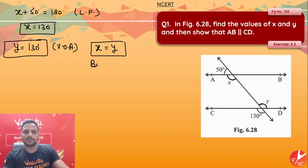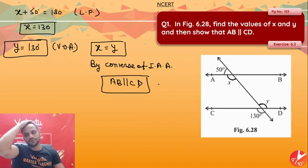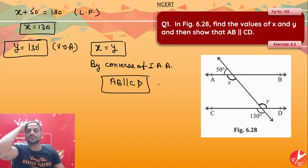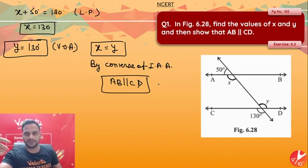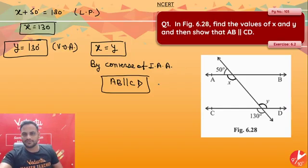So I can say by the converse of the interior alternate angle theorem, AB is parallel to CD. Whenever you have to prove two lines parallel to each other, always focus on using the converse theorems — converse of corresponding angles, converse of interior alternate, converse of exterior alternate, converse of interior consecutive, or converse of exterior consecutive.